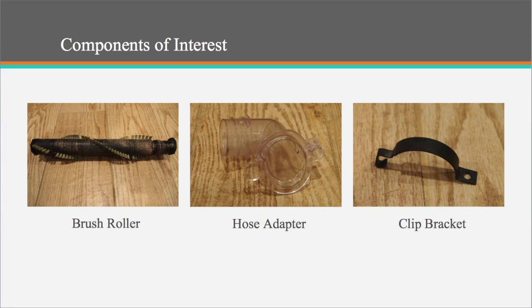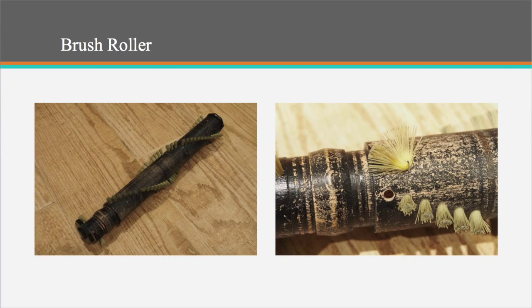From this list, three parts were chosen to be analyzed in more detail because of their shape complexity, material properties, and relation to some of the manufacturing processes covered in this course. The first part we decided to analyze is the roller brush.